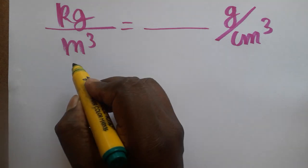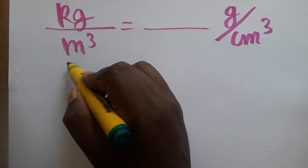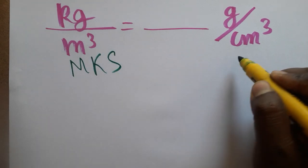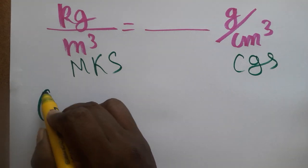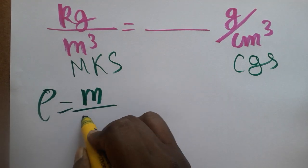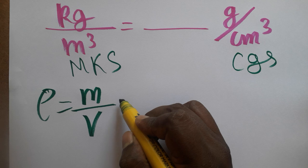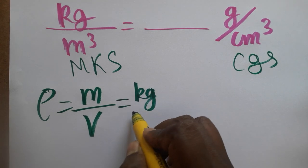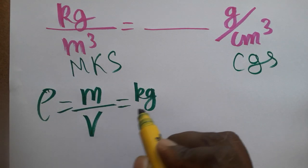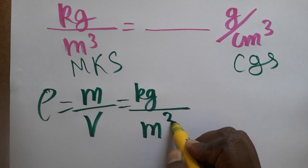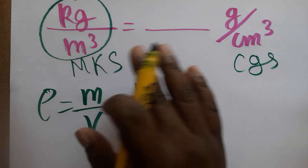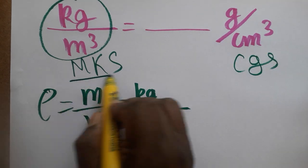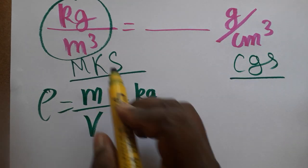Today we are going to see density unit — converting from MKS system to CGS system. Density is equal to mass per unit volume. Mass unit in SI is kg and volume is length into breadth into height, which is meter cube. We are going to convert from kg per meter cube to gram per centimeter cube.